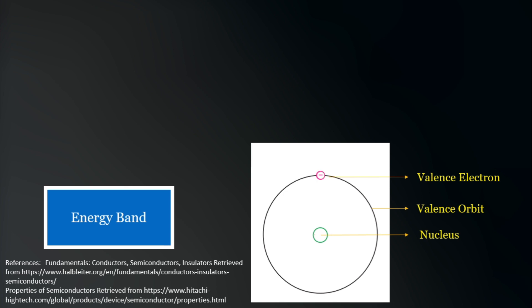When a valence electron gains enough energy due to, for example, a rise in temperature, it has a tendency to leave its parent atom and become a free electron, leaving behind a vacant hole in the valence orbit.